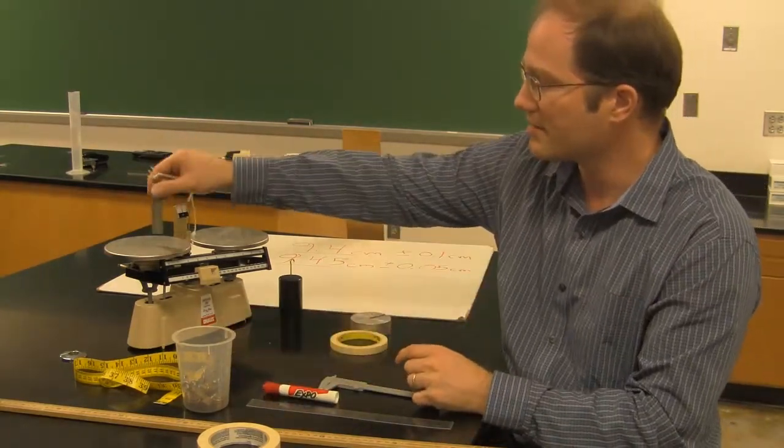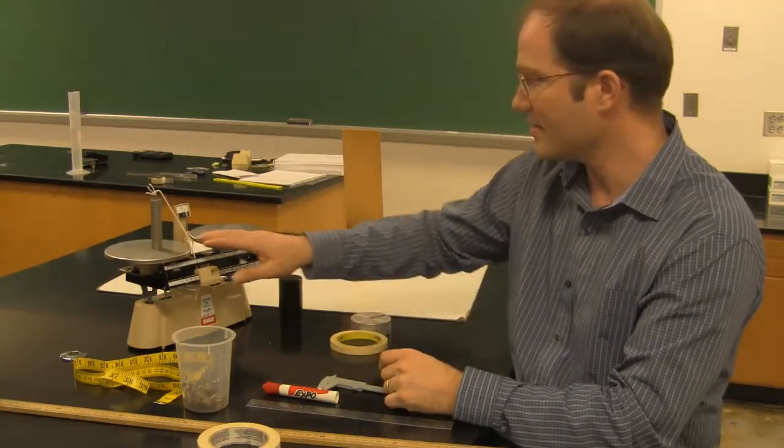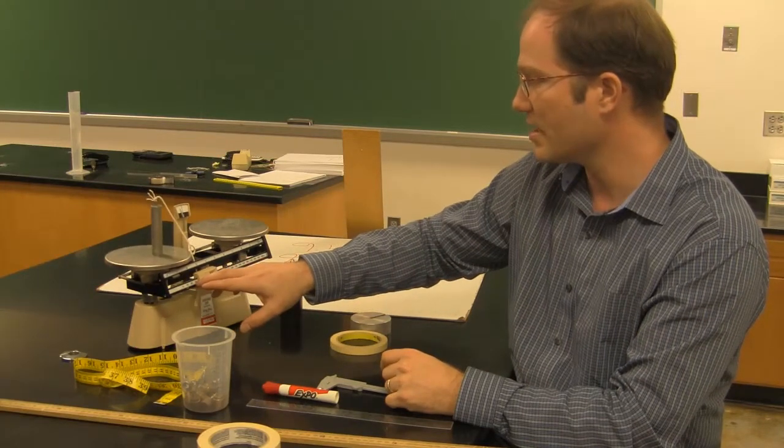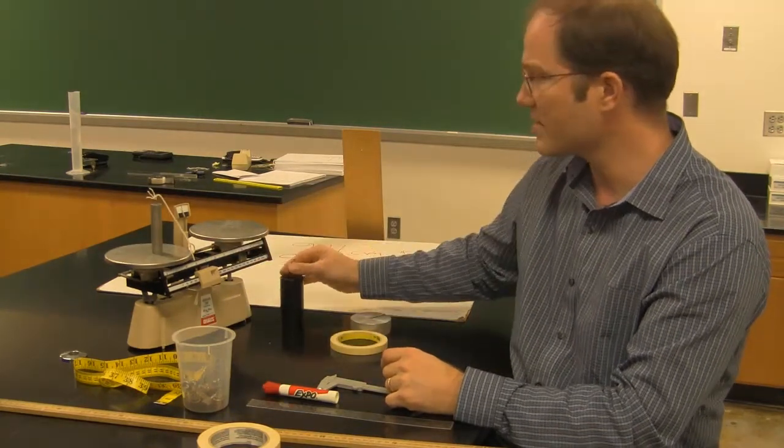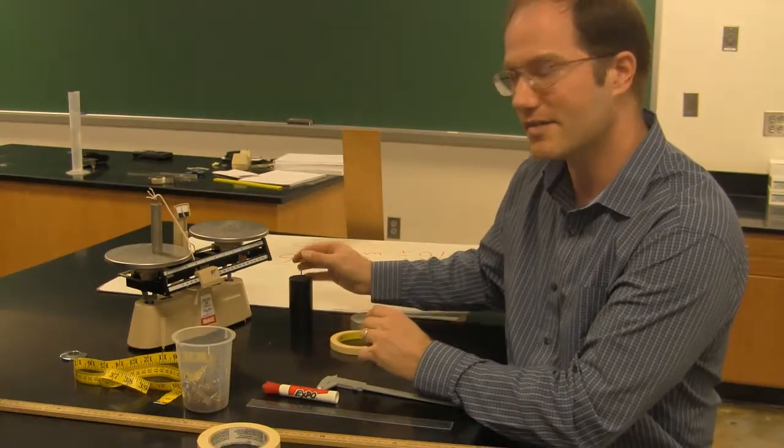The double pan balance is what you'll use to measure mass. You put a mass on one side and move these sliding masses around until it balances. If the sliding masses aren't enough to balance this, then you can set an offset mass on the other side. You'll have to add that mass in to your total sum.